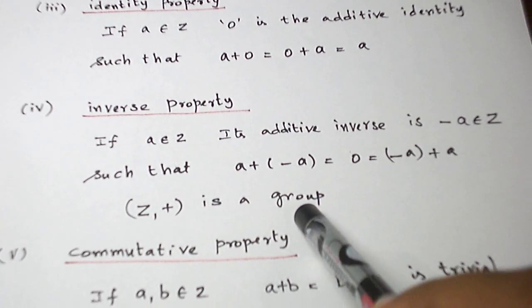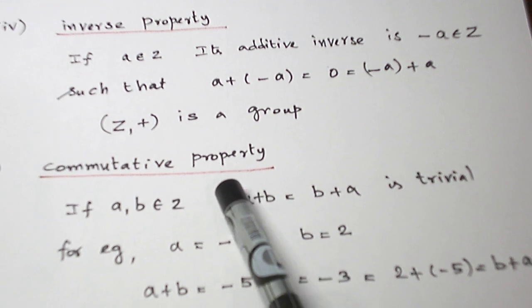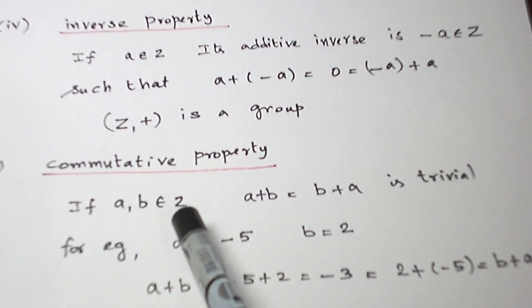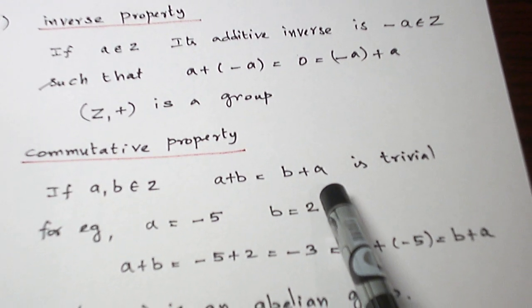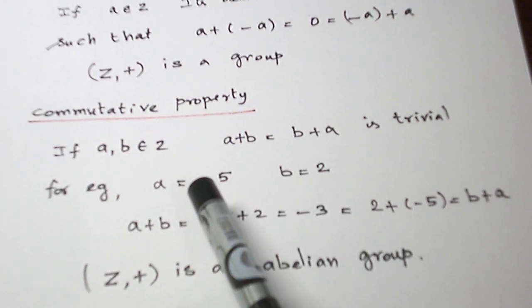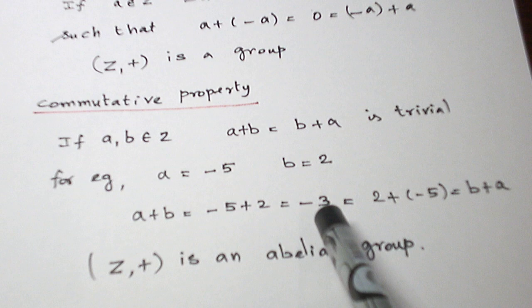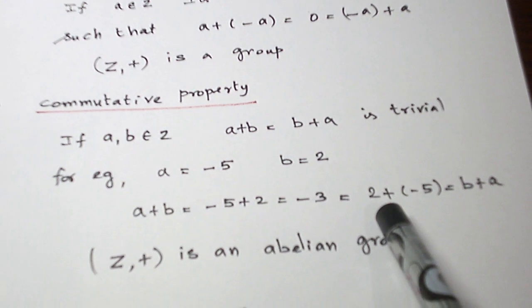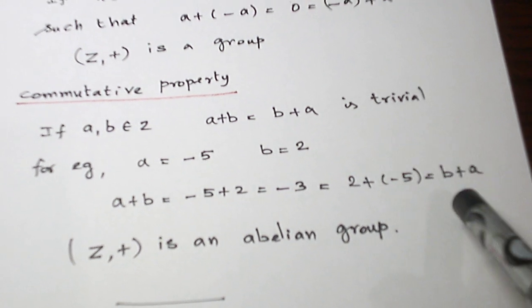(Z, +) is a group. Lastly, to prove it is an abelian group, let us prove the commutative property. A, B belongs to Z. A plus B must equal B plus A. That is trivial. Let us verify with one example. A equals minus 5, B equals 2. A plus B equals minus 3, which equals 2 plus minus 5, that is B plus A. So commutative property is also verified.